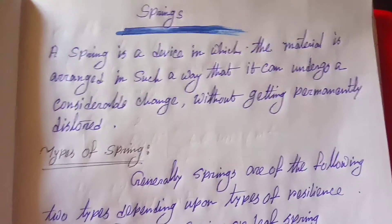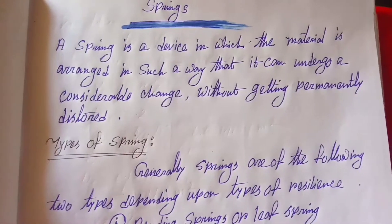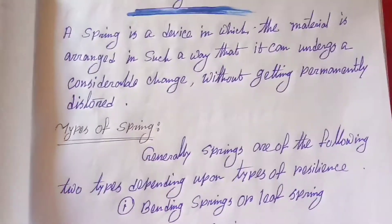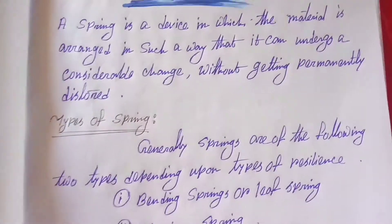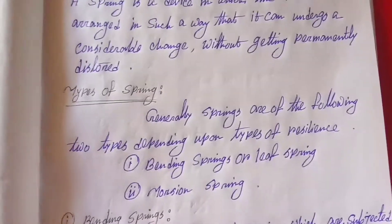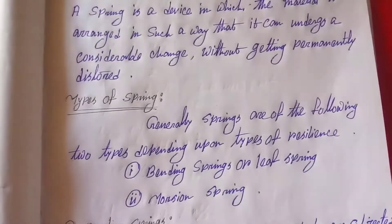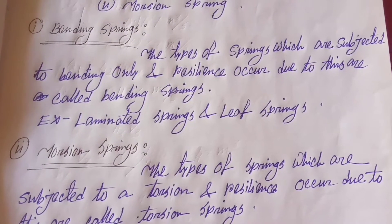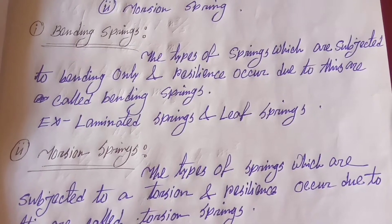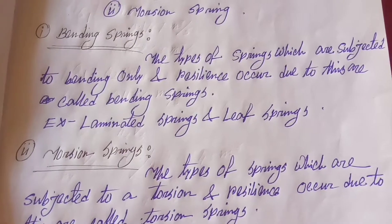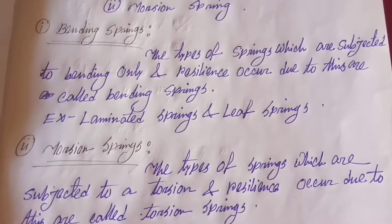Generally, springs are of the following two types depending upon the types of resilience. The first type is bending springs, also called leaf springs, and the second type is torsion springs. Bending springs are the type of springs which are subjected to bending only, and the resilience occurs due to bending.